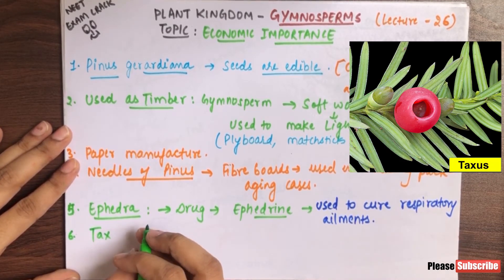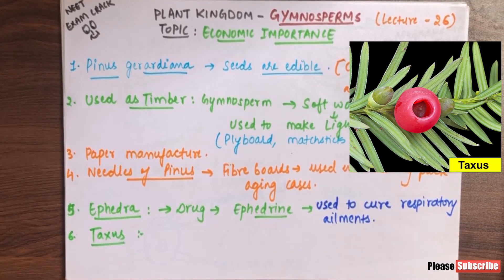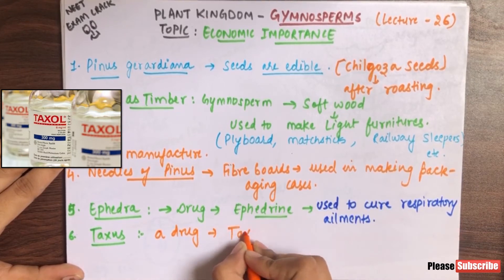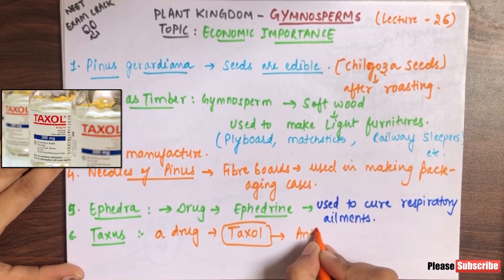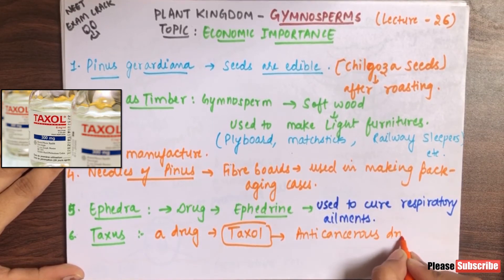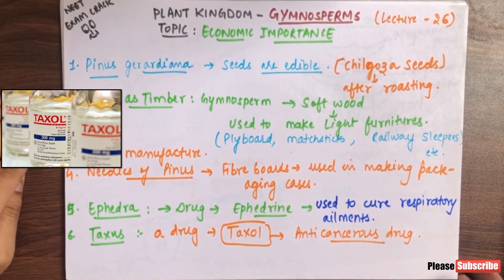From Taxus plants, a drug is extracted — taxol — which is an anti-cancerous drug. This anti-cancerous drug is used to treat various cancers.